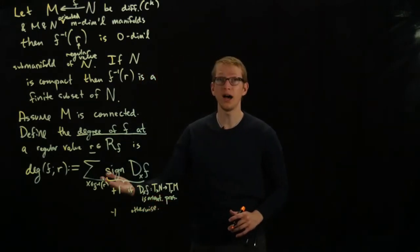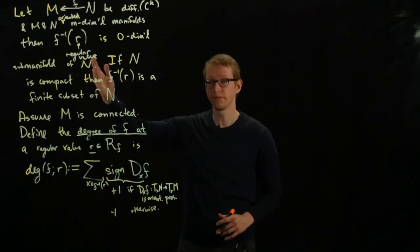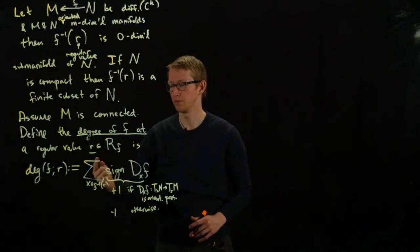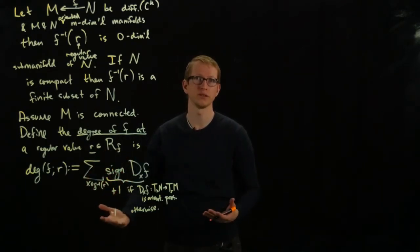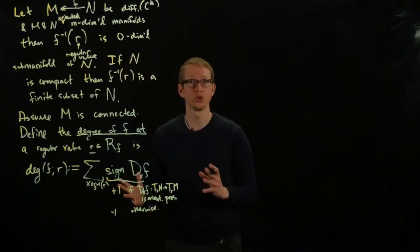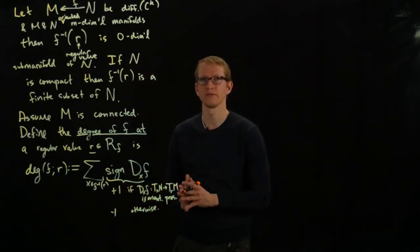And because this set of points is finite, provided that at least N is compact, then this sum is finite, and we're just adding a bunch of plus and minus ones. And we call this the degree of F at a regular value.